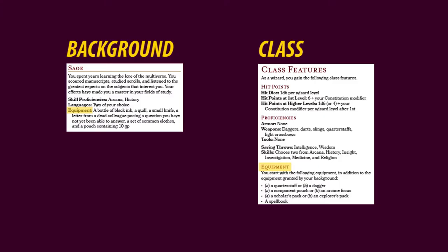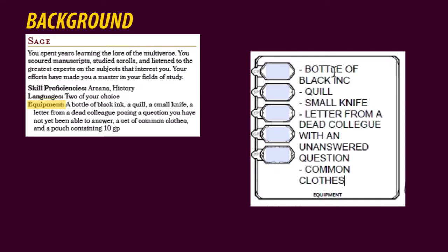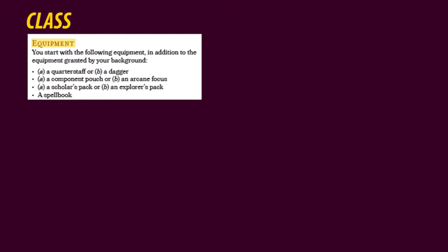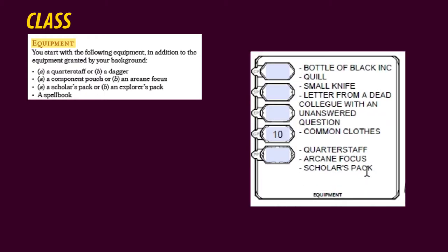Alright, time to fill in the equipment. We only have to look in our background and class. Usually there aren't that many options in the background. As a sage, this is what I get to bring over, including 10 gold pieces. The class gives you options — you get to choose between option A and option B. This is what I'm going to choose for Emanon: a quarterstaff, an arcane focus, a scholar's pack, and the obligatory spellbook.